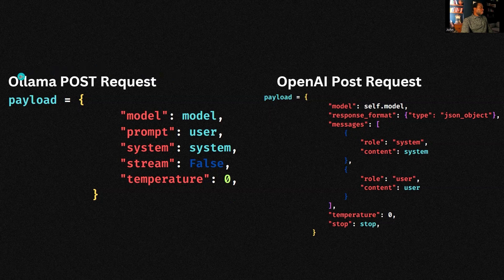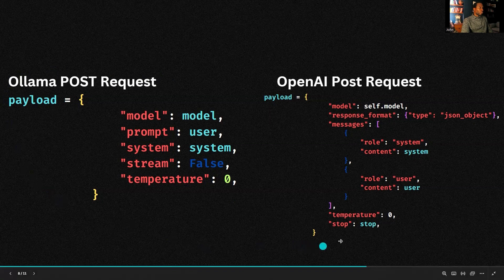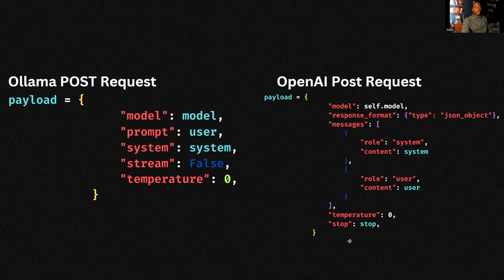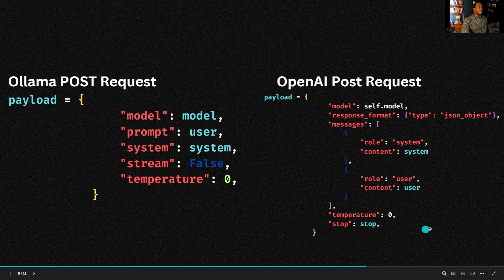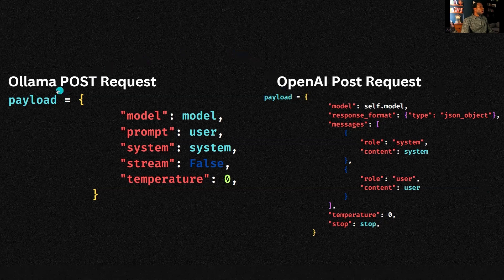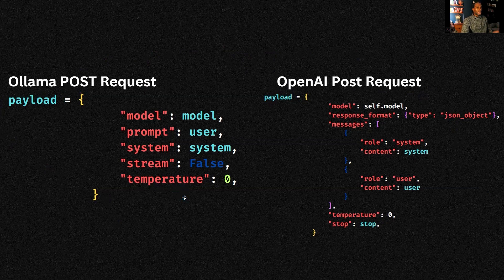What you see on the left-hand side is the format of the POST request that you would send to OLAMA, and you can see how this differs from the format of the POST request for the OpenAI server. If you're using an abstraction on top of the OpenAI server, such as something from LangChain, this is all done behind the scenes for you. But this is the nature of the POST request, and it just requires some minor adjustments in the code to make sure you're sending your data to the right server in the right form.